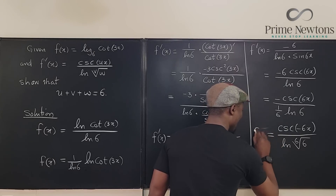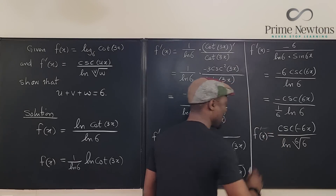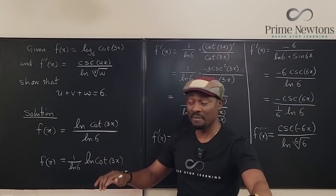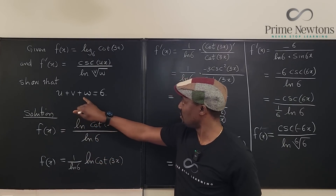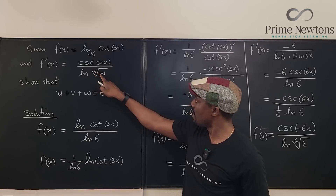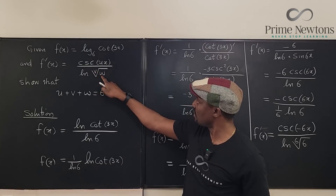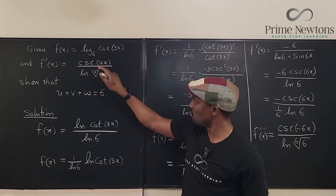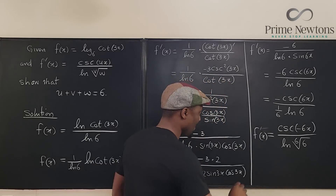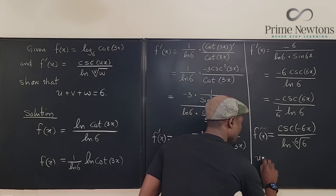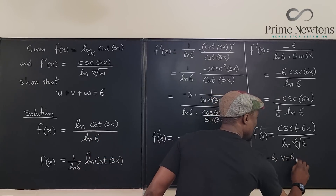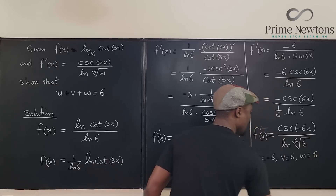It's a lot of manipulation to be able to do this. Now let's confirm that u plus v plus w equals 6. It means if you put the number from each position together you should get 6. u equals negative 6, v equals 6, w equals 6. So negative 6 plus 6 plus 6 equals 6. Is that true? Yes.